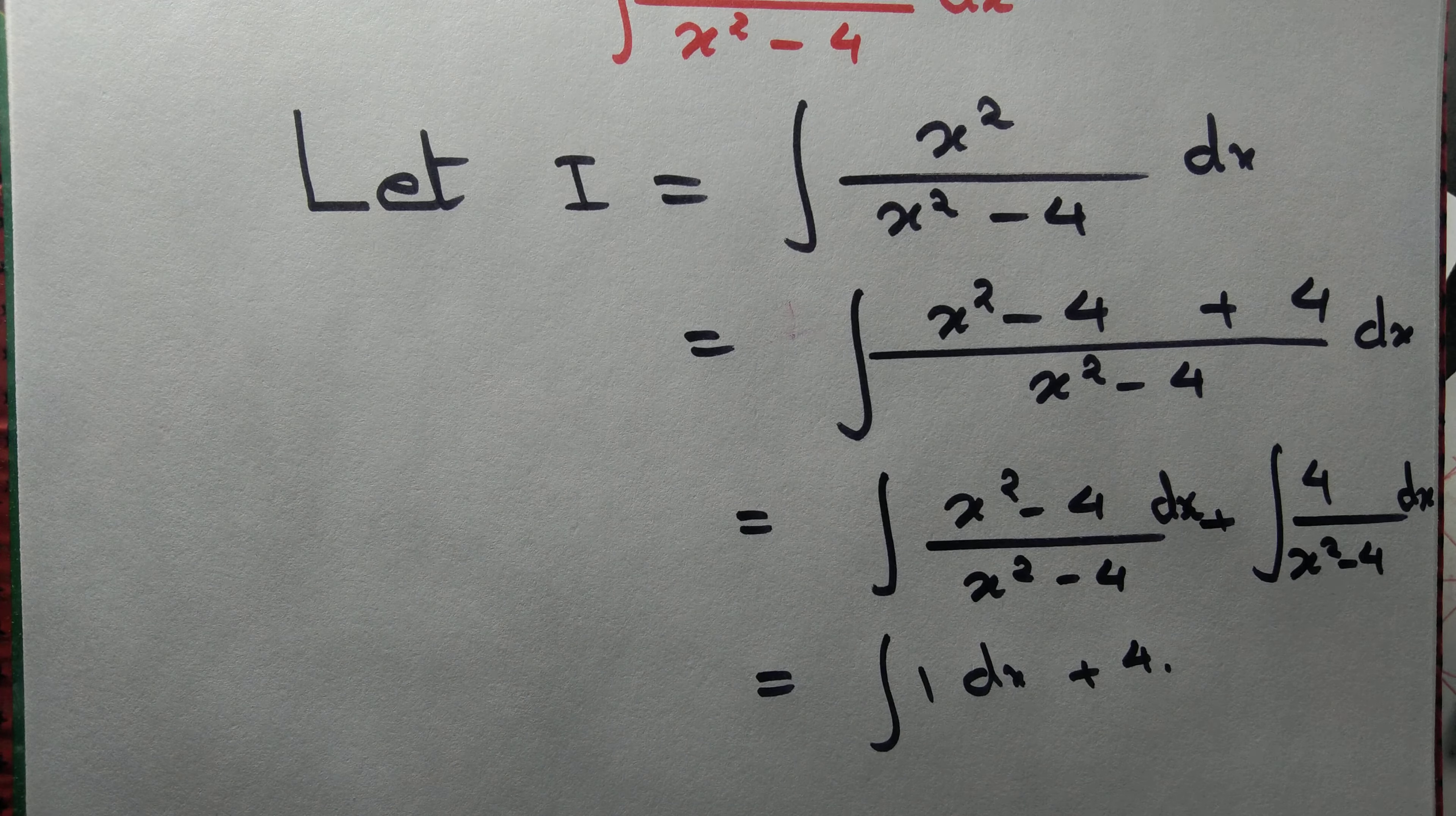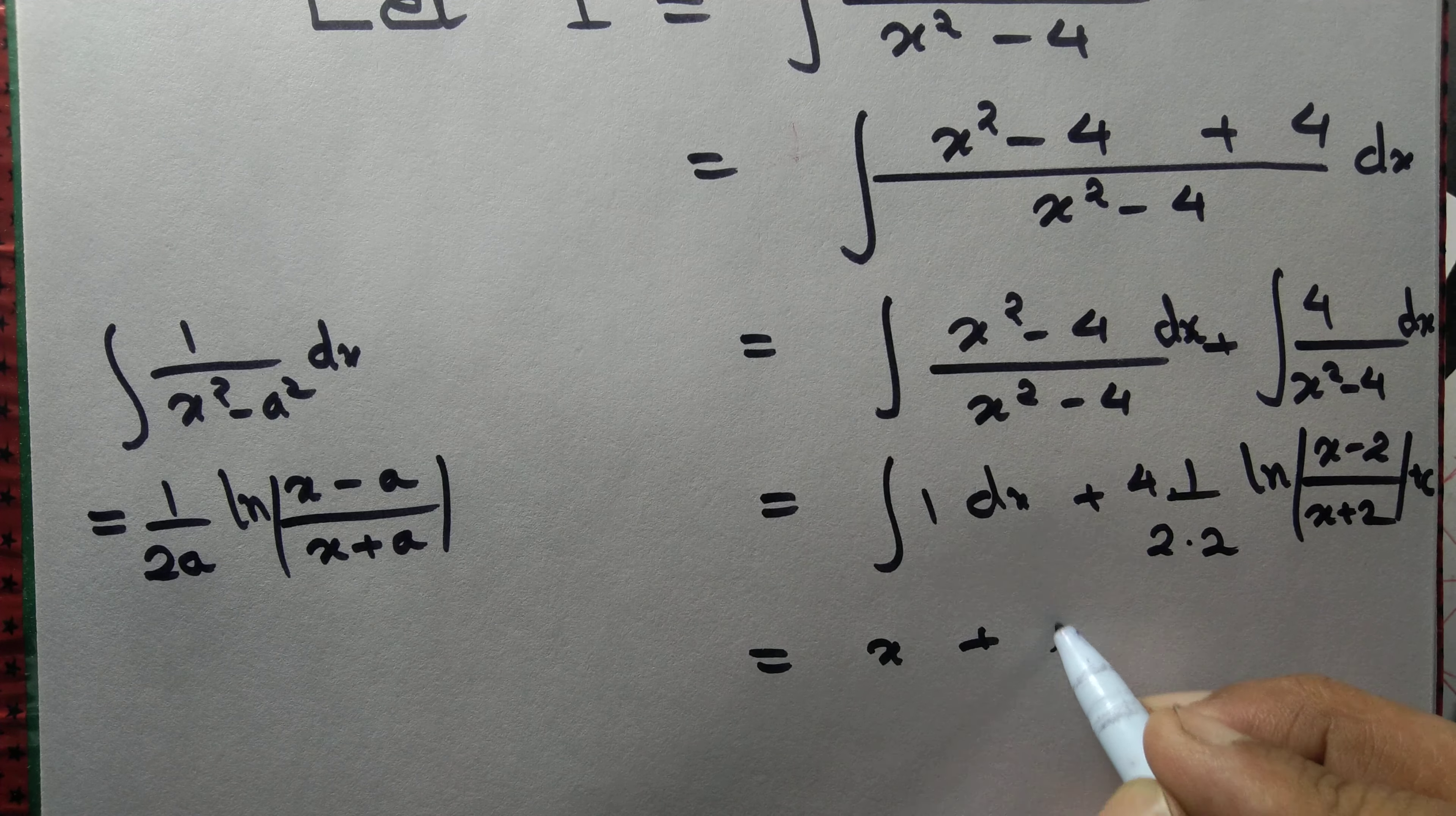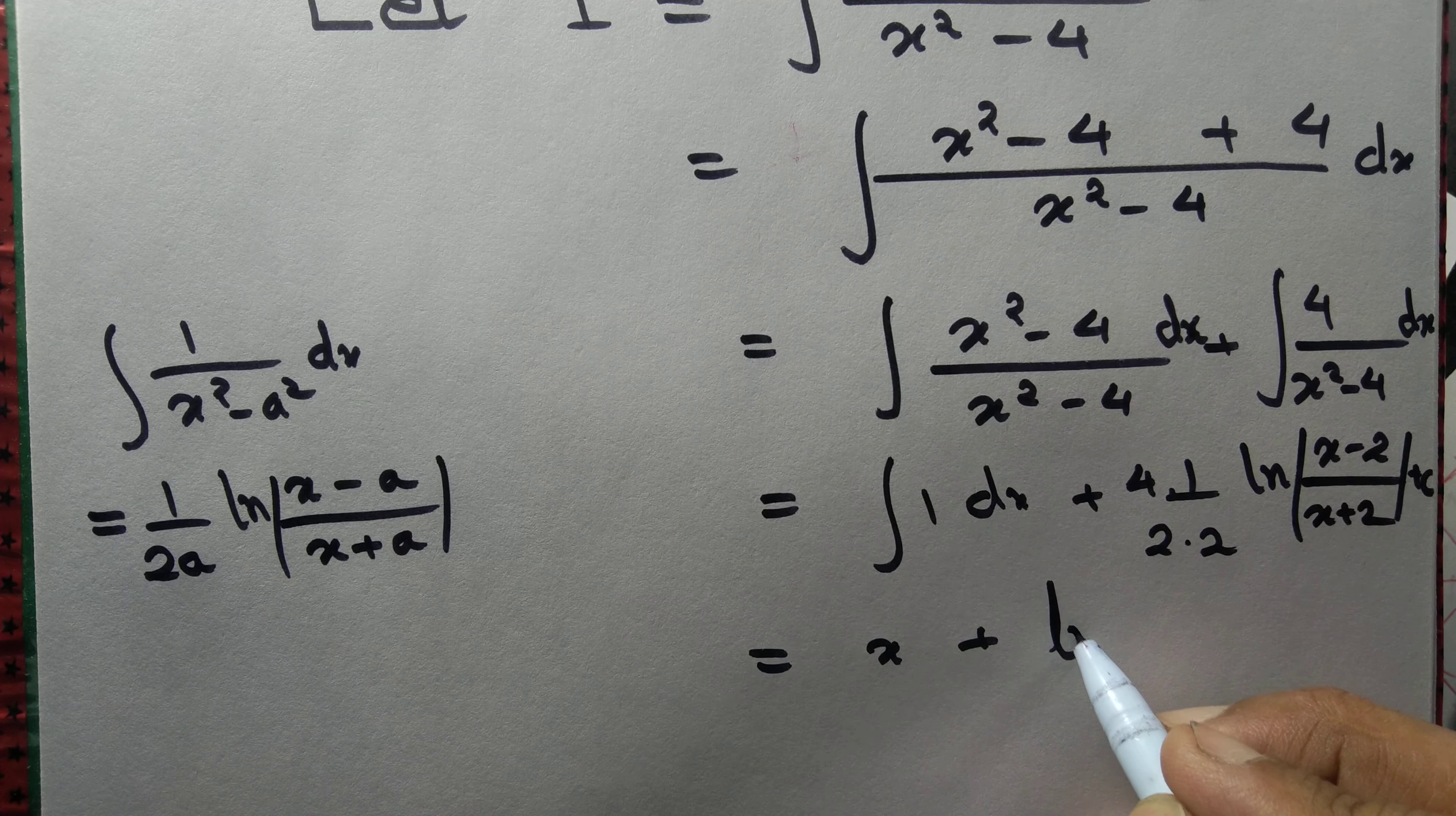That's equal to 1 by 2a ln of x minus a by x plus a. Here a equals 2 because 4 is 2 square.